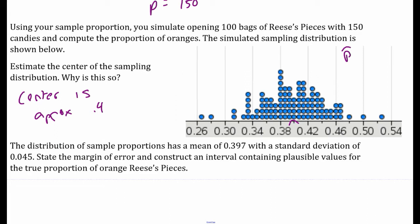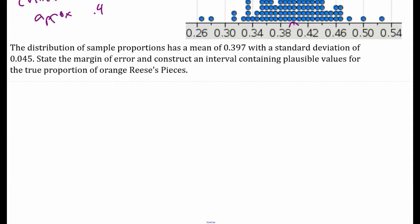State the margin of error and construct an interval containing plausible values for the true proportion. The big idea from the lesson today is margin of error. Our margin of error is 2 times the standard deviation — it captures the middle 95% of the data. So my margin of error is 0.09.